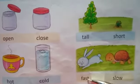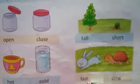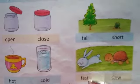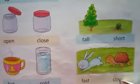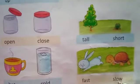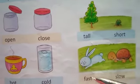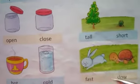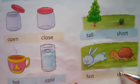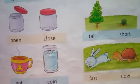Fast. F-A-S-T. Fast means taz. Fast ka opposite hoga? Slow. S-L-O-W. Fast ka opposite slow hoga. Thank you.